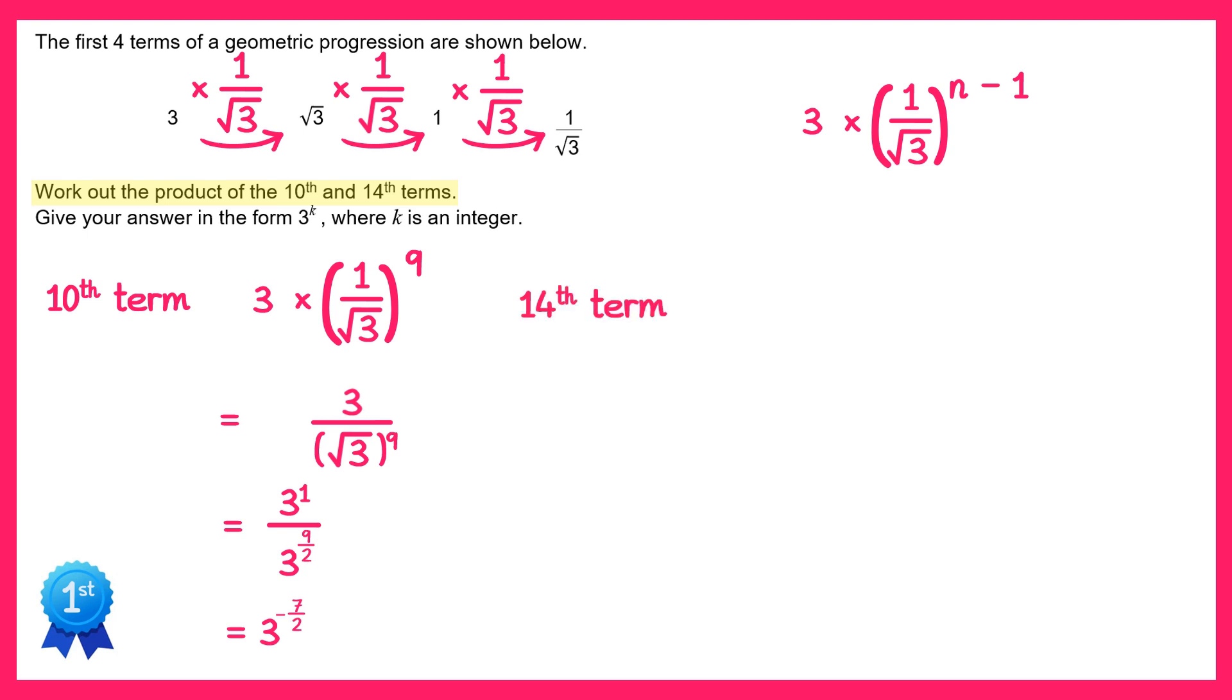We'll do the same process for the 14th term. So this time it's 3 times 1 over square root 3 to the power 14 minus 1. 14 minus 1 is 13. So this equals 3 times 1 to the power 13 over square root 3 to the power 13. 1 to the power 13 is just 1 and 3 times 1 is 3. So we have 3 to the power 1 on the top and on the bottom we have square root 3 which is 3 to the power 1 half all to the power 13. So if we multiply 1 half and 13 we get 13 over 2. So it's 3 to the power 13 over 2. We now subtract these powers: 1 take away 13 over 2 is negative 11 over 2.